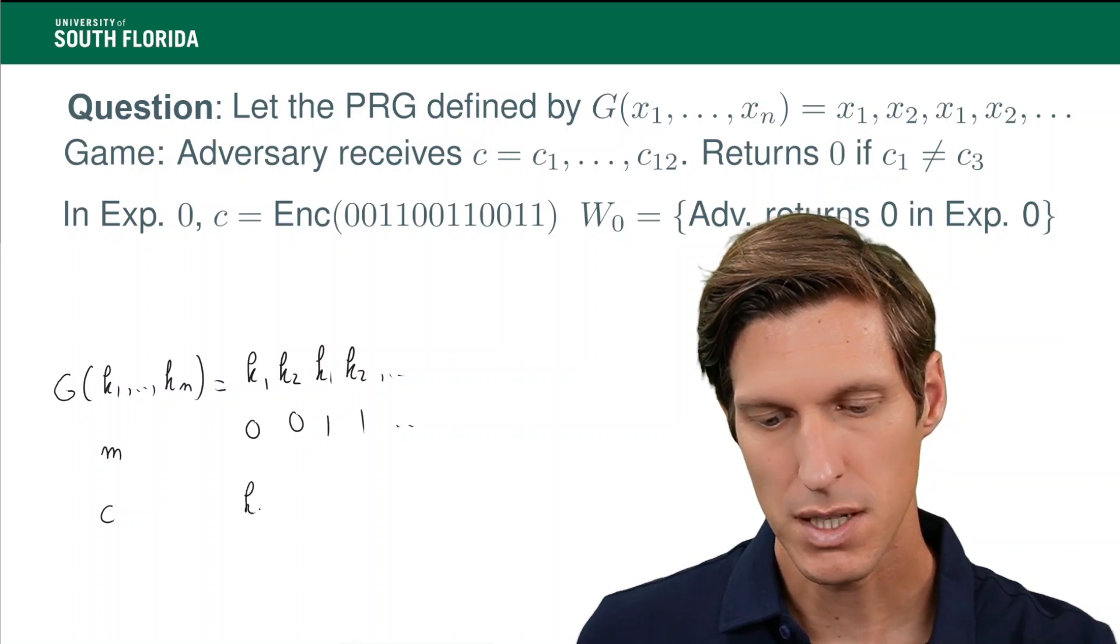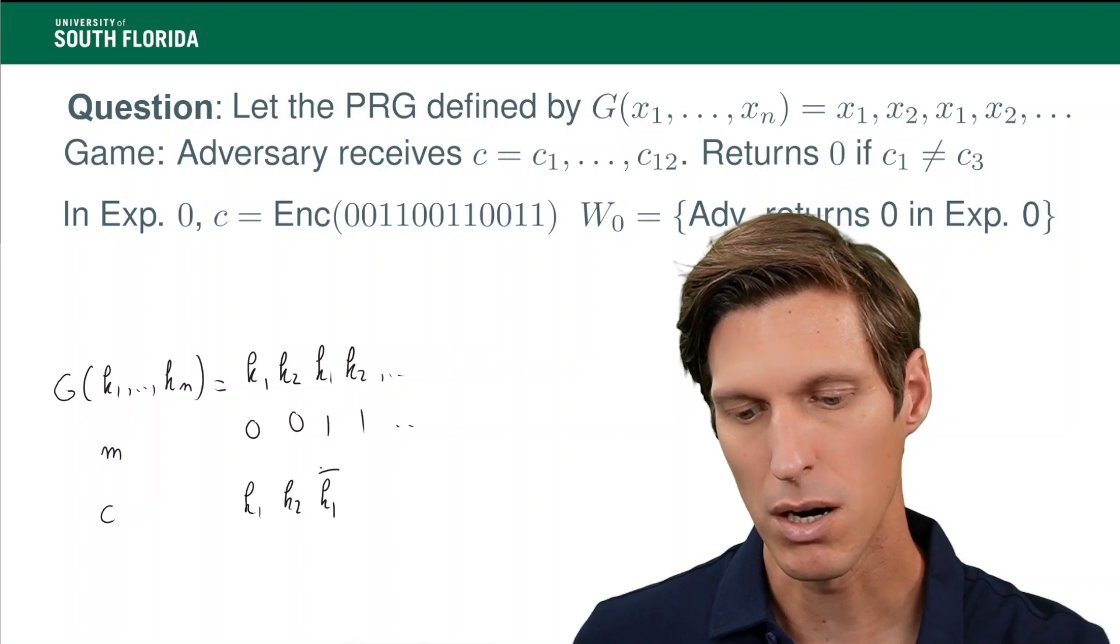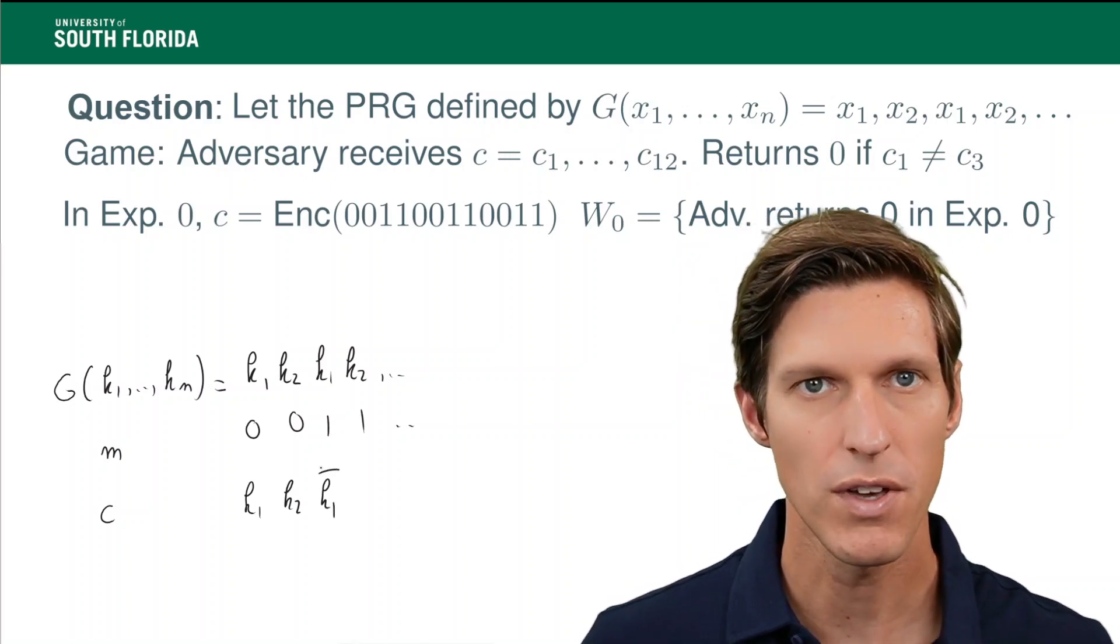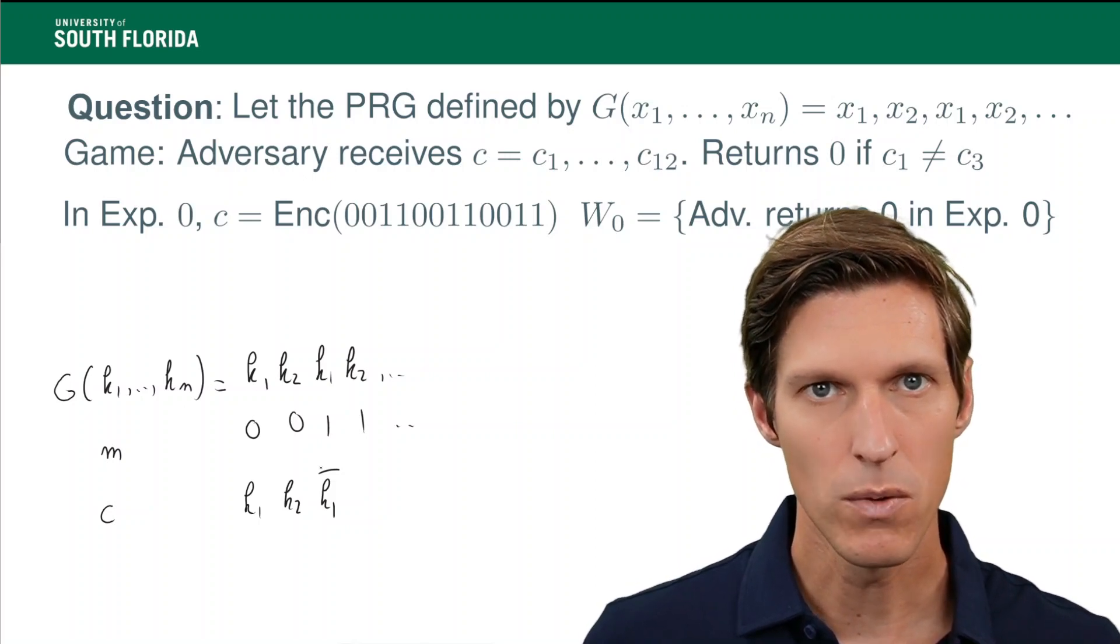So here we have first bit is a k1, second bit is a k2, and third bit is a k1 bar. So k1 XOR 1. So if k1 is a 0, then we get a 1. If the k1 is a 1, we get a 0.